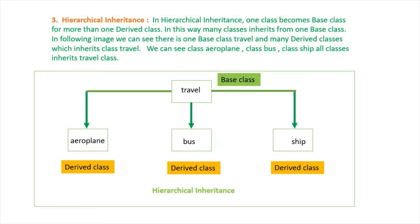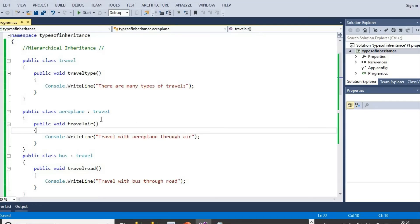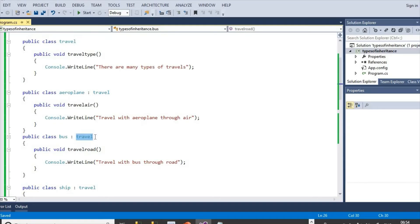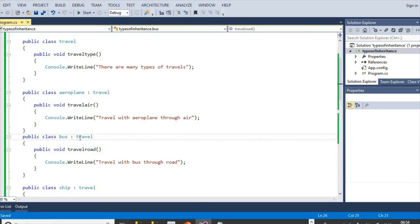In hierarchical inheritance, there is one base class and many derived classes. Class Travel is the base class and classes Aeroplane, Bus, and Ship are all derived classes which inherit the common base class Travel. Taking the previous multi-level example, we change Bus class so that it now inherits class Travel instead of class Aeroplane.